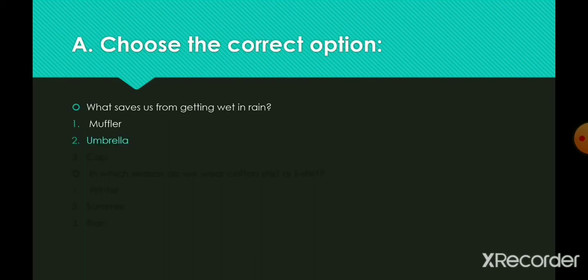In which season do we wear cotton shirt or t-shirt? 1. Winter, 2. Summer, 3. Rain. The right answer is 2, Summer.